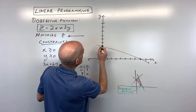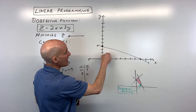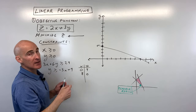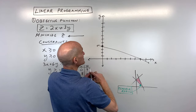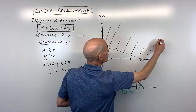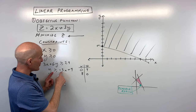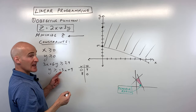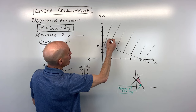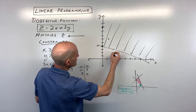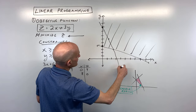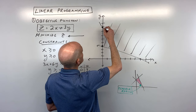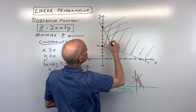When graphing using the x and y intercepts, pick a point on either side of the line and test it. If I put (0, 0) — the origin — into 3x + 6y ≥ 24, is 0 greater than or equal to 24? No. So we shade on the other side of the line. For the second inequality, y is greater than or equal to negative 3x plus 9. The y-intercept is 9, and the slope is negative 3 — going down 3, over 1. Since y is by itself and y is greater than, we shade above the line.